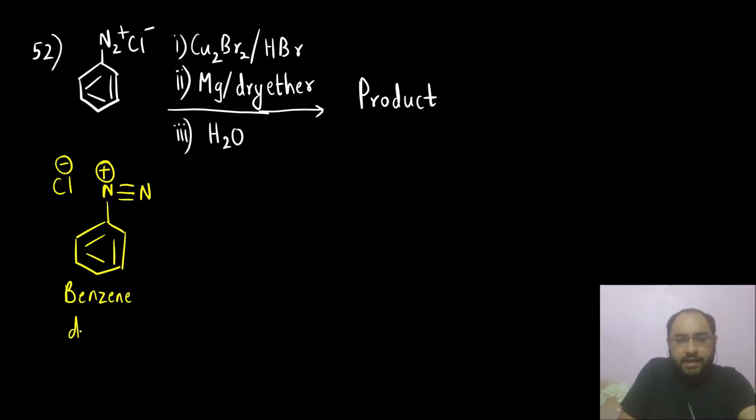This is what? What is the name of this compound? Benzene diazonium, diazo means azo means nitrogen, diazo means two nitrogen, diazonium chloride, Cl minus is chloride.